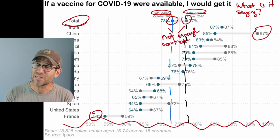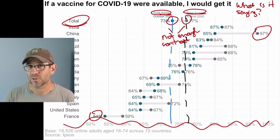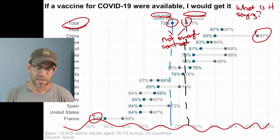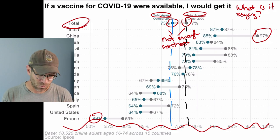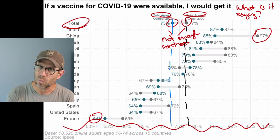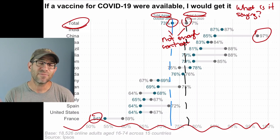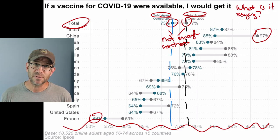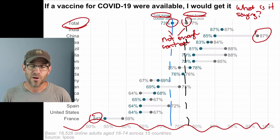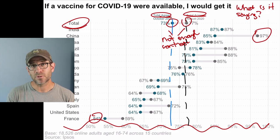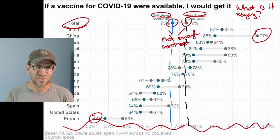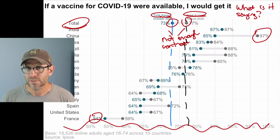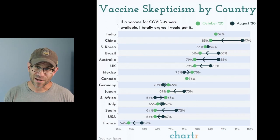If the goal is to compare the change in opinions, maybe we leave Total in there, or choose a different way to represent the change — perhaps a slope chart where the x-axis is the date (August and October) and the y-axis is percentages, with a separate line for each country. That's not a perfect solution either, but maybe we'll talk about that in a future episode. The Chart-R version provoked a lot of the same questions the Ipsos version did.